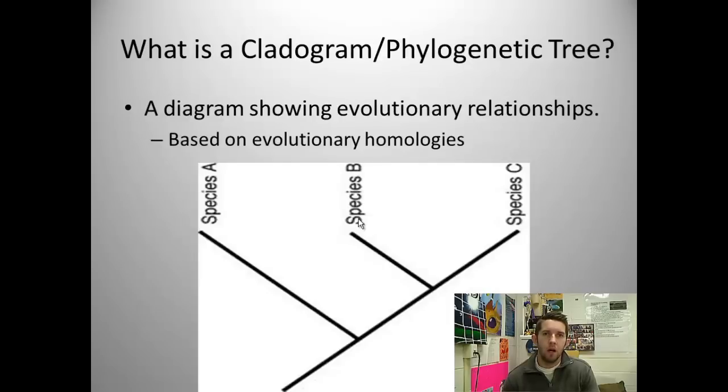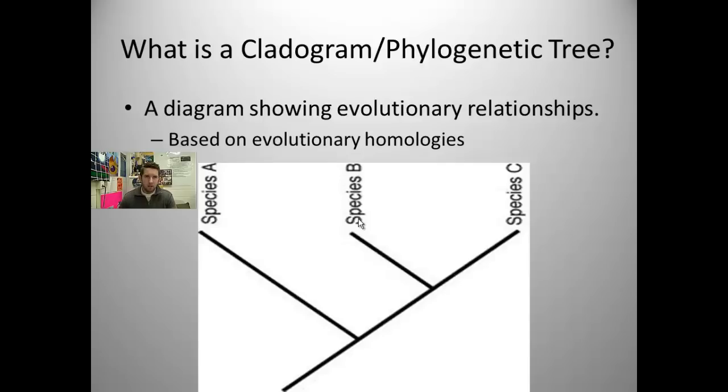What is a cladogram? It's a diagram that shows evolutionary relationships based on evolutionary homologies. If time is progressing this way, organisms down here on the cladogram are more ancient. Organisms toward the end of the tree are more recent, perhaps even still alive today.